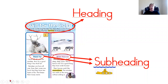Inside the article you'll see that there is a heading at the very top that says 'Built for the Cold.' That heading is going to tell the reader that everything they read on that page is about a reindeer and how their body is built for the cold.